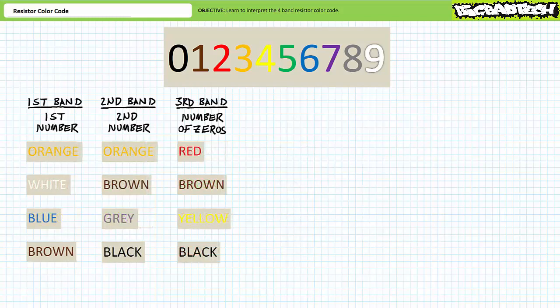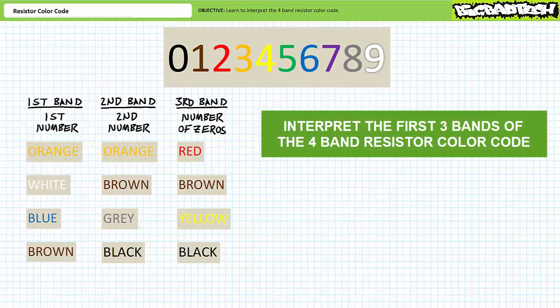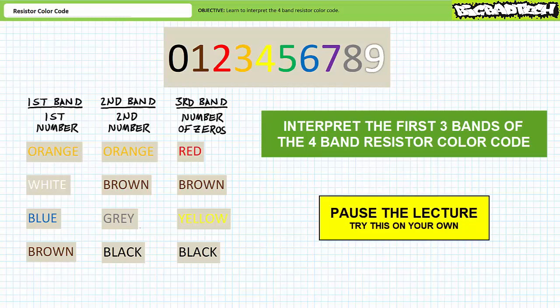Let's try a couple reps to see if you're tracking before we introduce some of the idiosyncrasies of the four-band resistor color code. Consider the sample set of resistors. See if you can interpret the first three bands and express the nominal or nameplate value of these resistors using appropriate engineering format. By all means, pause the lecture and try this on your own. If you're tracking, you should have obtained the following results.